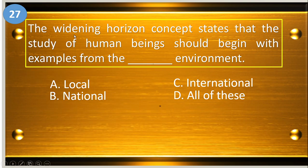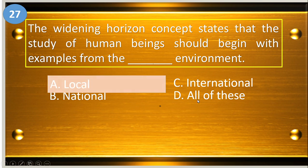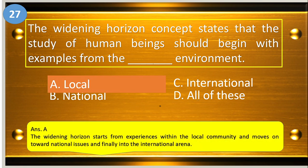Number twenty-seven: the widening horizon concept states that the study of human beings should begin with examples from blank environment. A, local; B, national; C, international; and D, all of these. The answer is local.